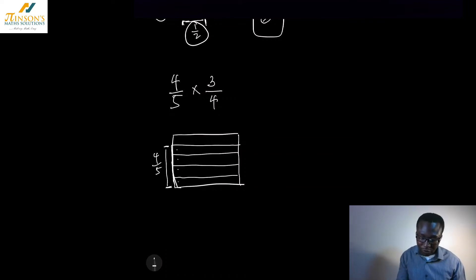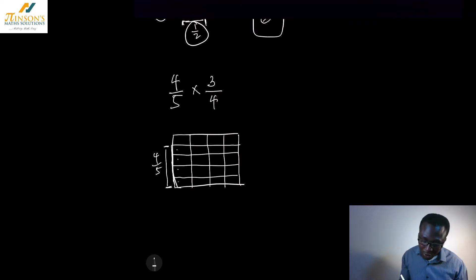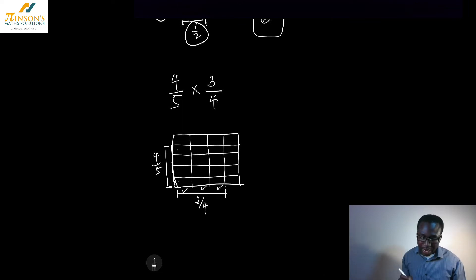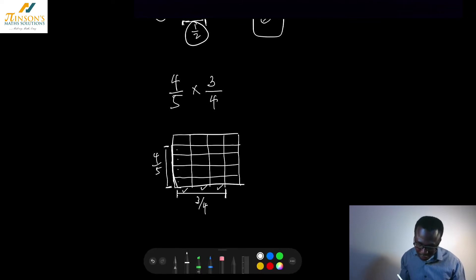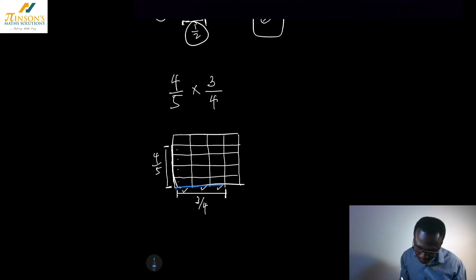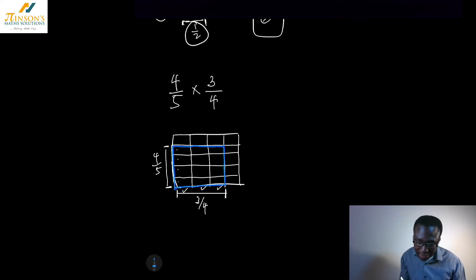Now I want three quarters the other way. So I want to split into quarters: one, two, three, and four. I want three of my quarters that way — so that's three quarters. I want to see where they both merge, so I'm going to use a different color to help identify it.